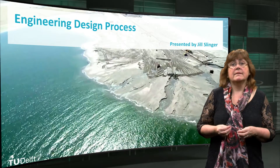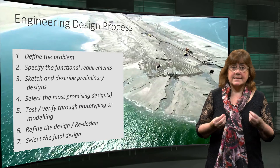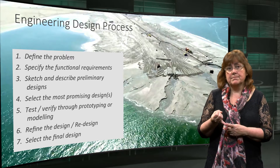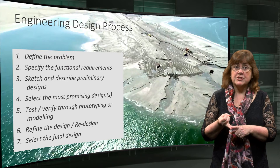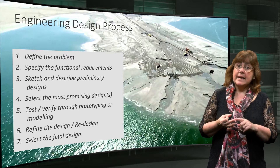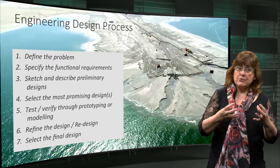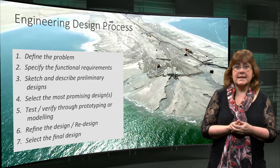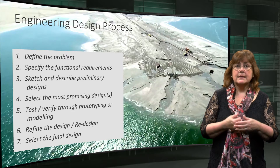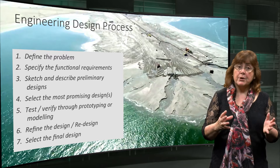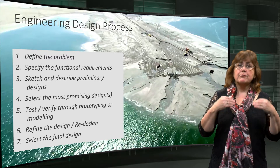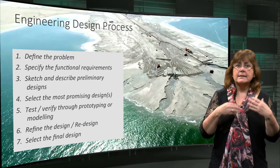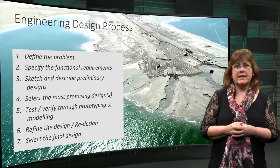Major steps in the engineering design process are: Define the problem; Specify the functional requirements; Sketch and describe preliminary designs; Select the most promising designs; Test through prototyping or modelling; Refine the design or even redesign; Select the final design.